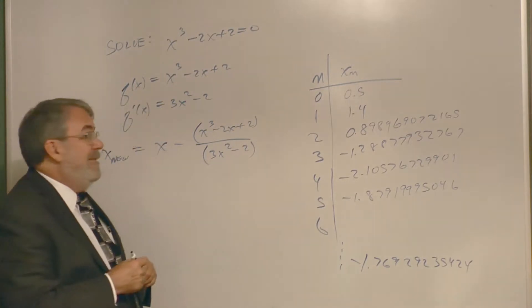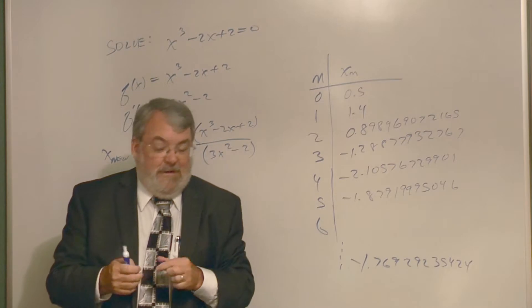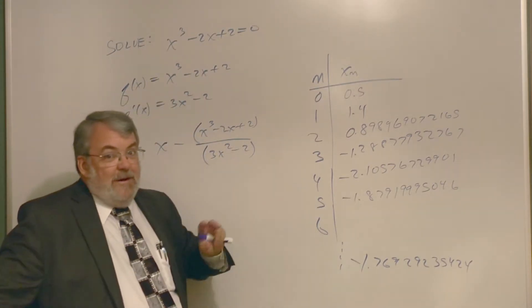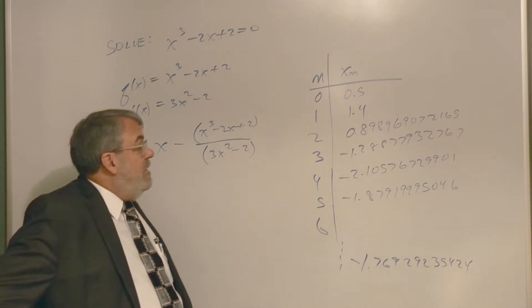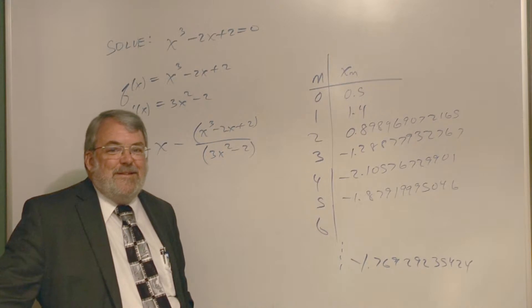To me, for a third degree polynomial, that was a kind of a weird result. But anyway, things can be a little bit unpredictable with Newton's method. All right, I'm gonna wrap this up with another segment here.